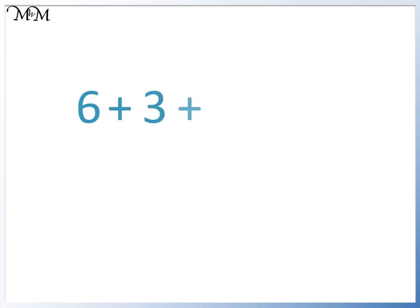2 times 8 equals 16. Here is 6 plus 3 plus 3. We will try and make a double. 3 plus 3 is the same as the other number in our sum: 6.